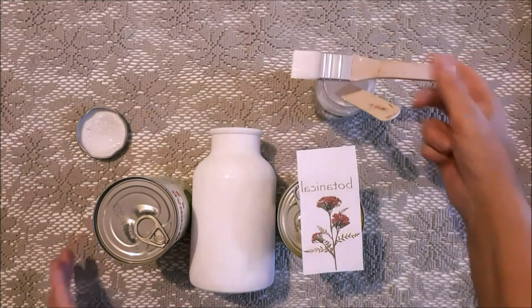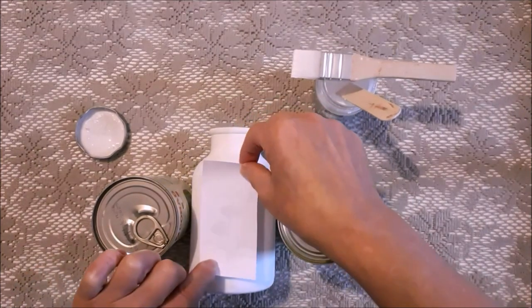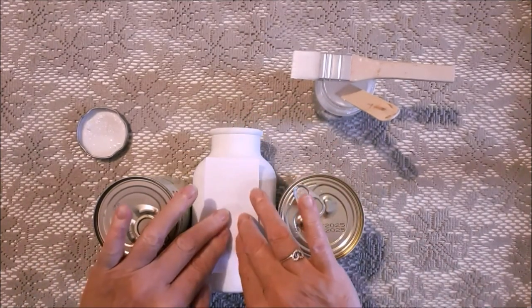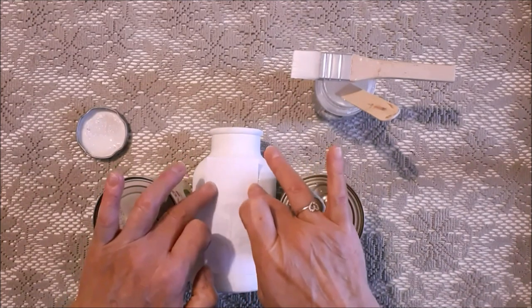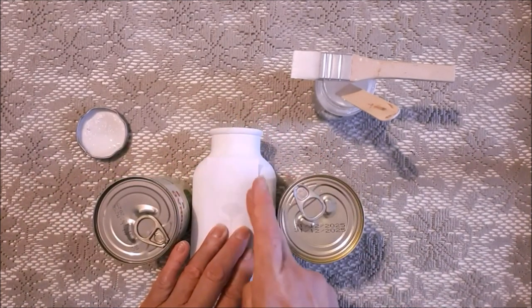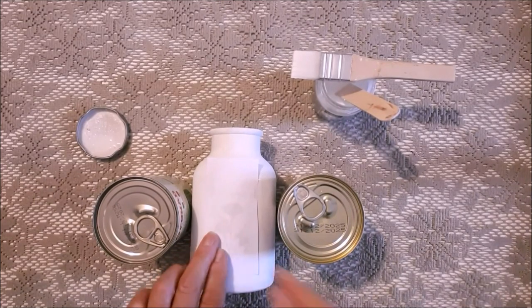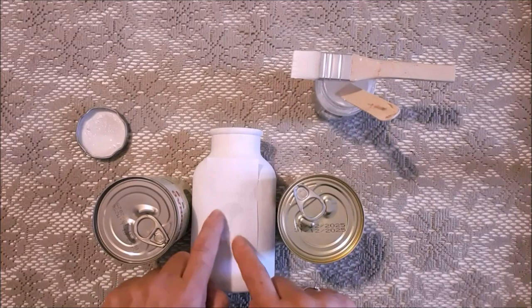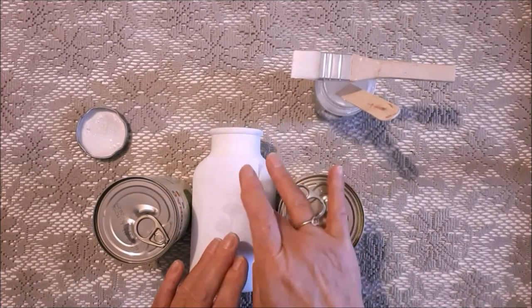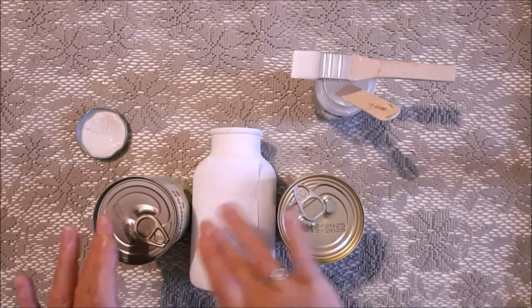When you've done that, just place your image face down onto the wet medium and press it down. Now you've got to leave your image down like that for about three minutes, and the important thing is that the paper mustn't dry, otherwise it will stick to the bottle. If you just add a little bit of matte medium on top of the paper as well, just to keep the paper moist.